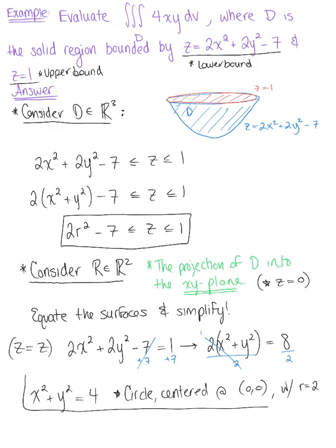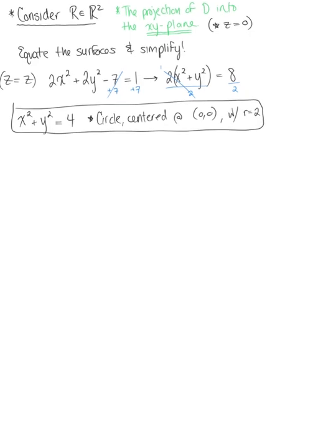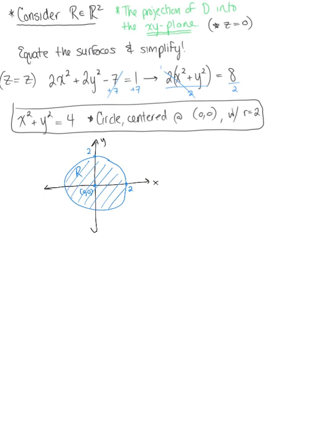We'll use this to define the bounds on r and theta. Sketching the circle in the xy-plane with radius 2 centered at the origin, we can see that r goes from 0 to 2, and since this is a complete circle, theta goes from 0 to 2π.